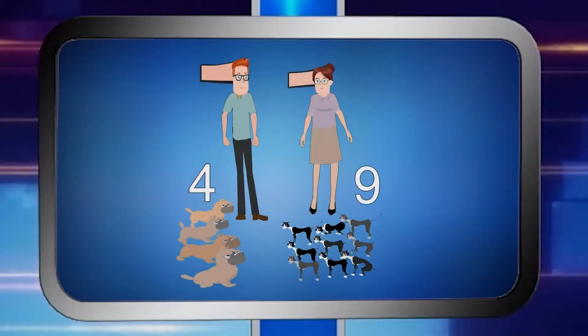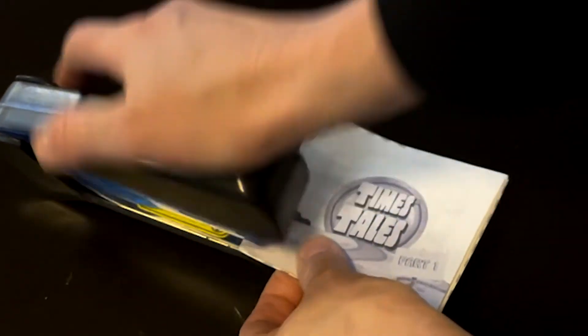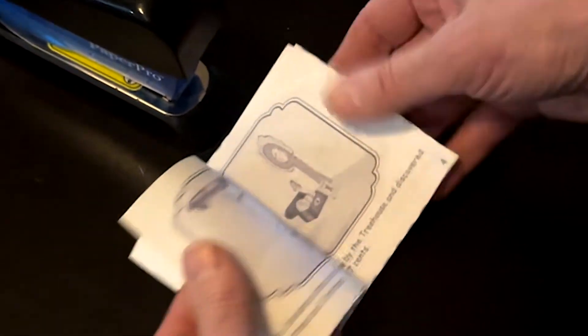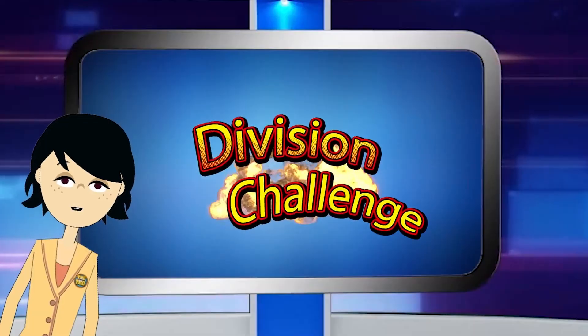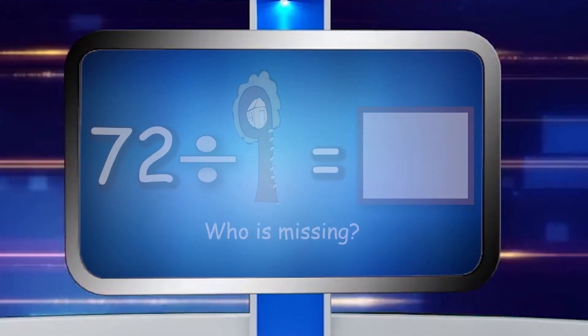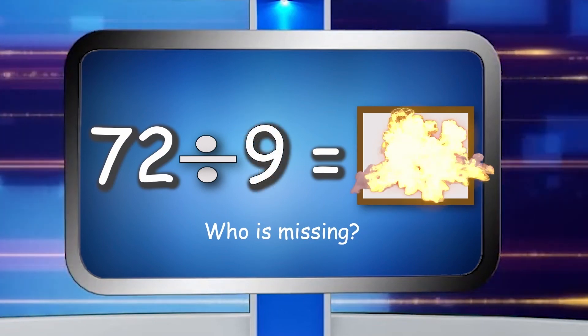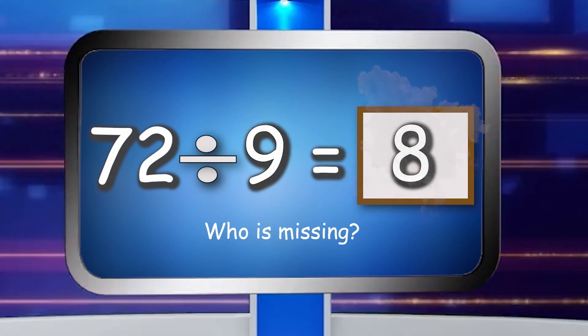All the classroom editions come with an individual mini storybook that the student can put together and take home for an additional review of the stories. There is also a division bonus section at the end of the game show quiz in part 1 and part 2. This is a great way for the visual learners to see the connection between division and multiplication.